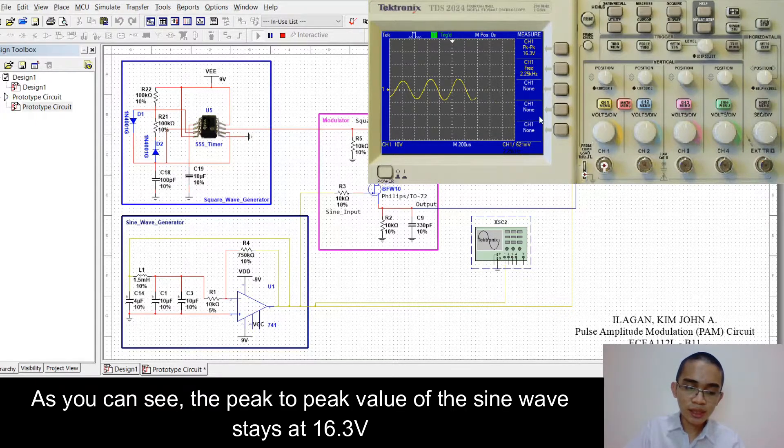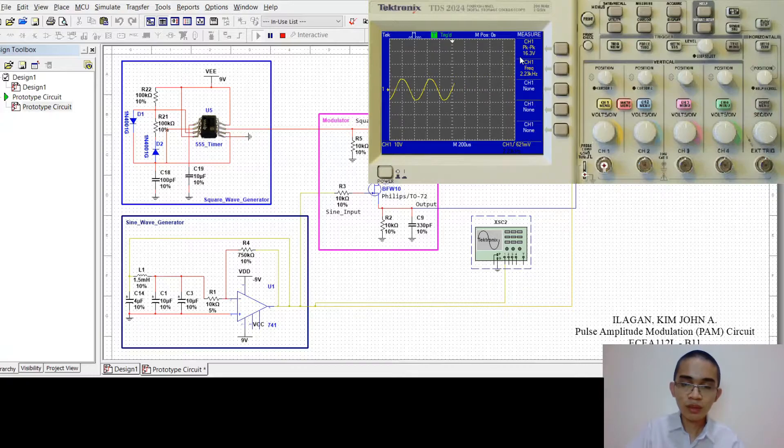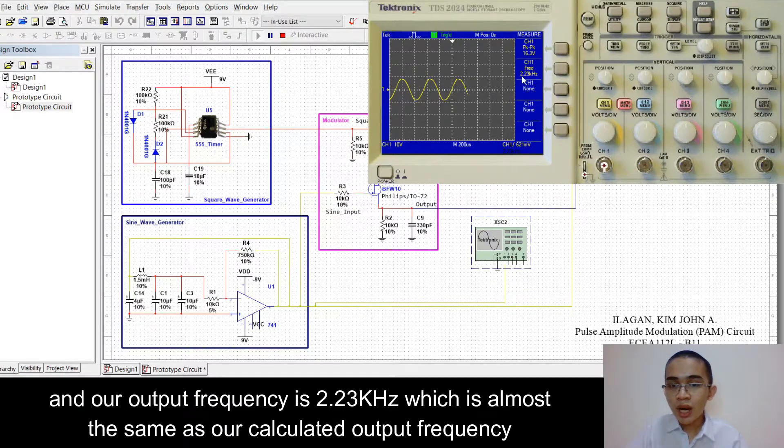As you can see, the peak-to-peak value of the sine wave stays at 16.3 volts. And our output frequency is 2.23 kilohertz which is almost the same with our calculated output frequency.